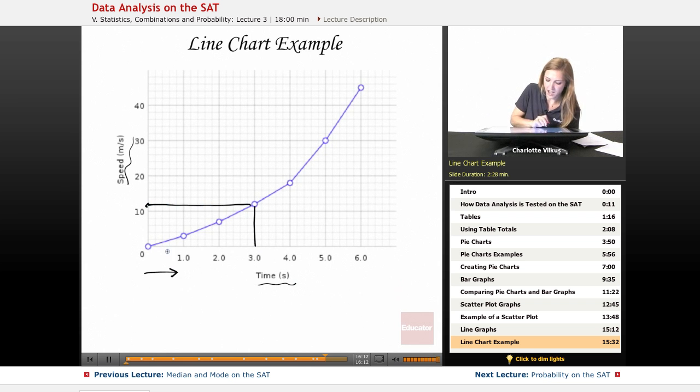So somebody's obviously taken time intervals between each of these and then plotted them. But then if I want to know in between time, so if I want to know at about 5.6 seconds how fast I'll be going,